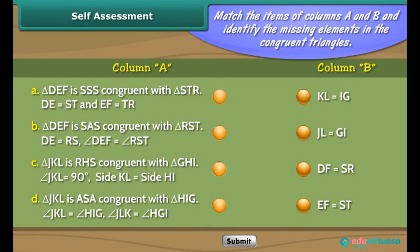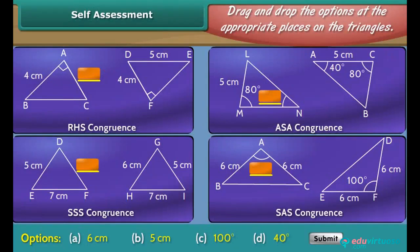Self-assessment: Match the items of columns A and B, and identify the missing elements in the congruent triangles. Then drag and drop the options at the appropriate places on the triangles.